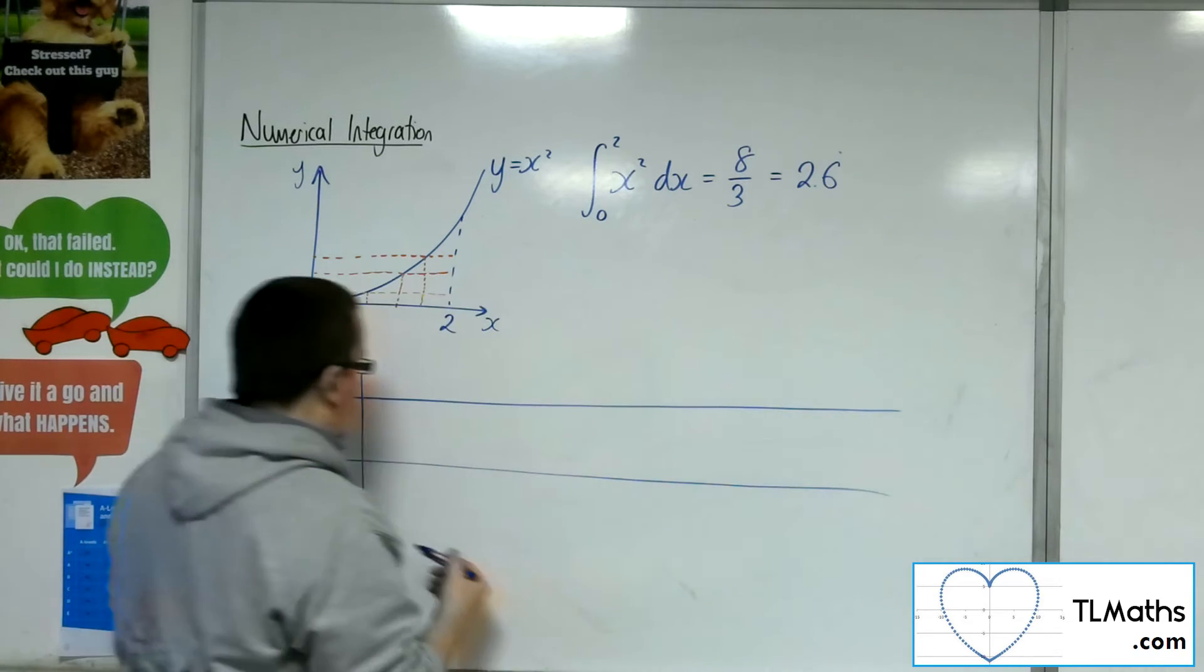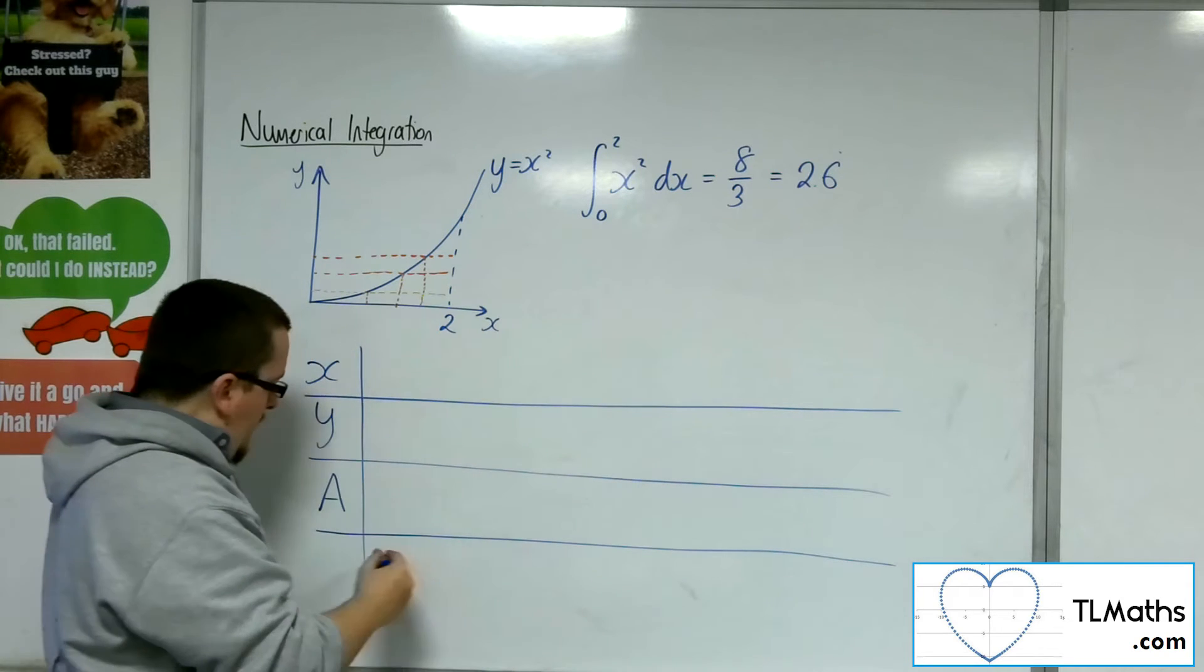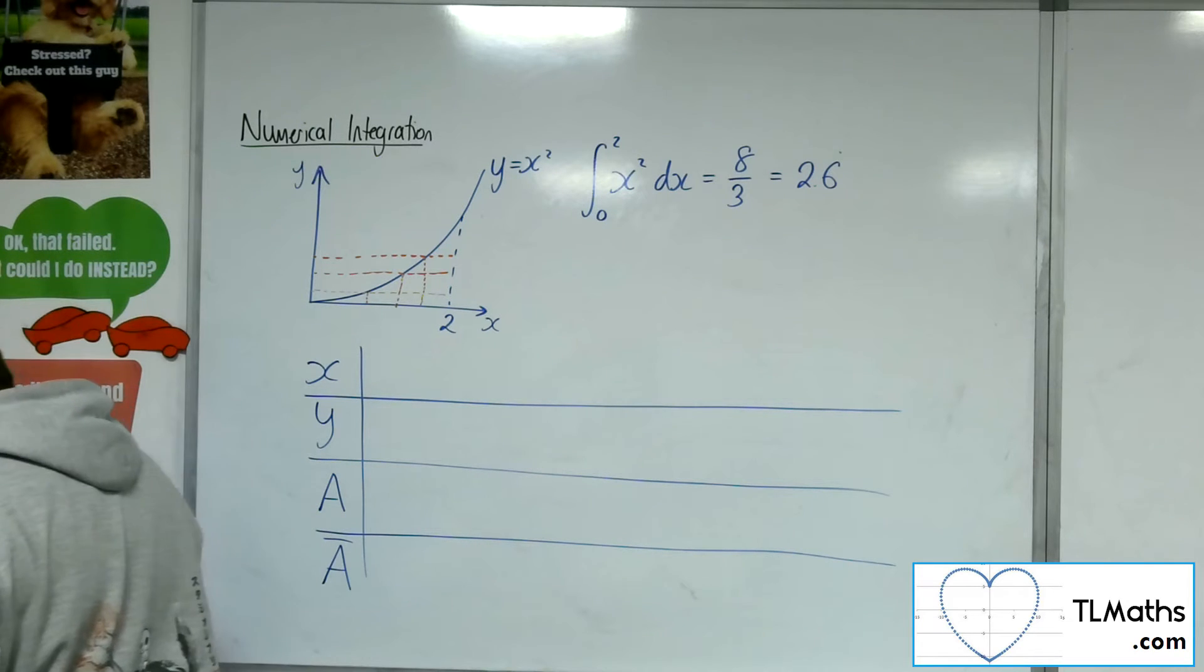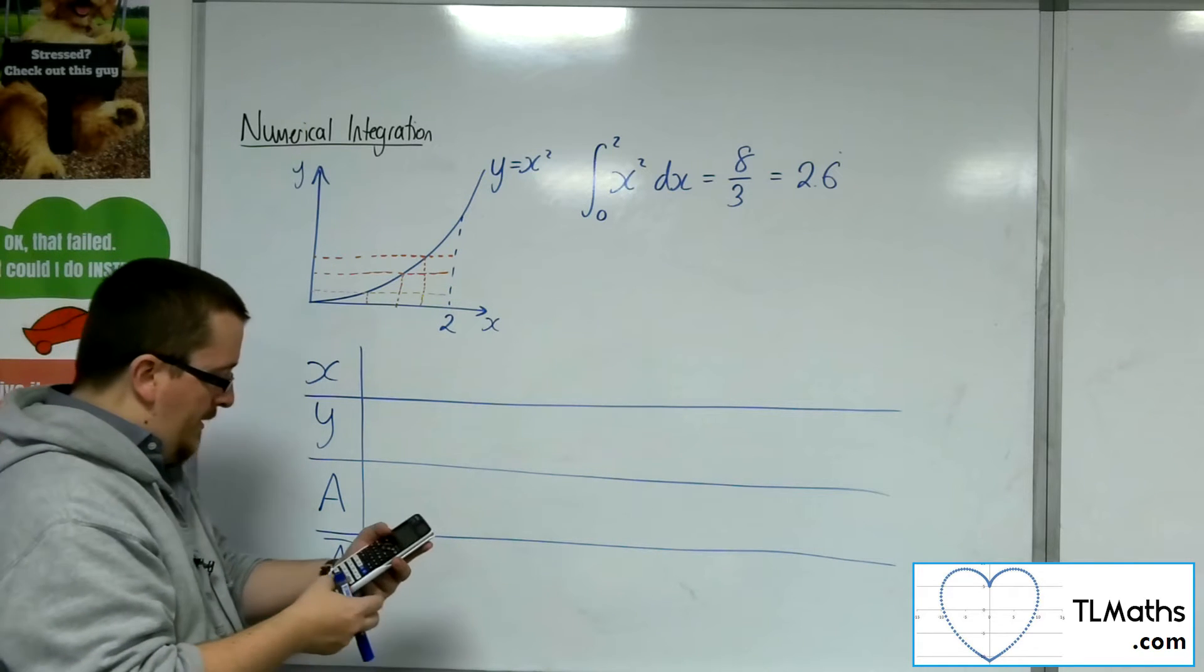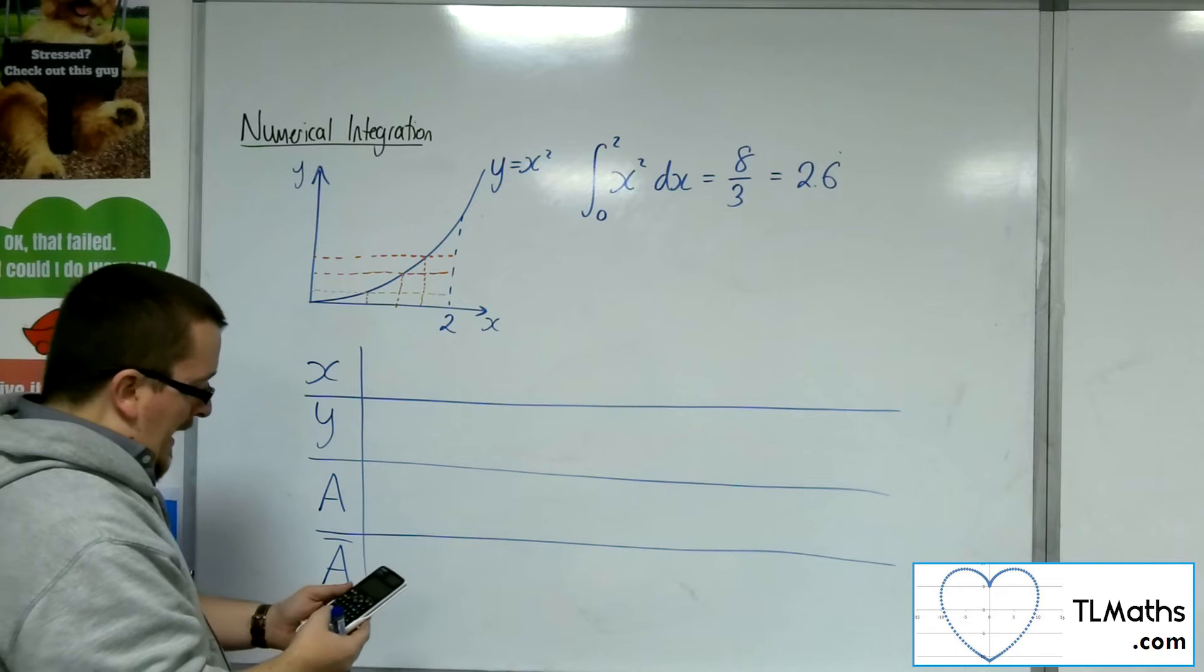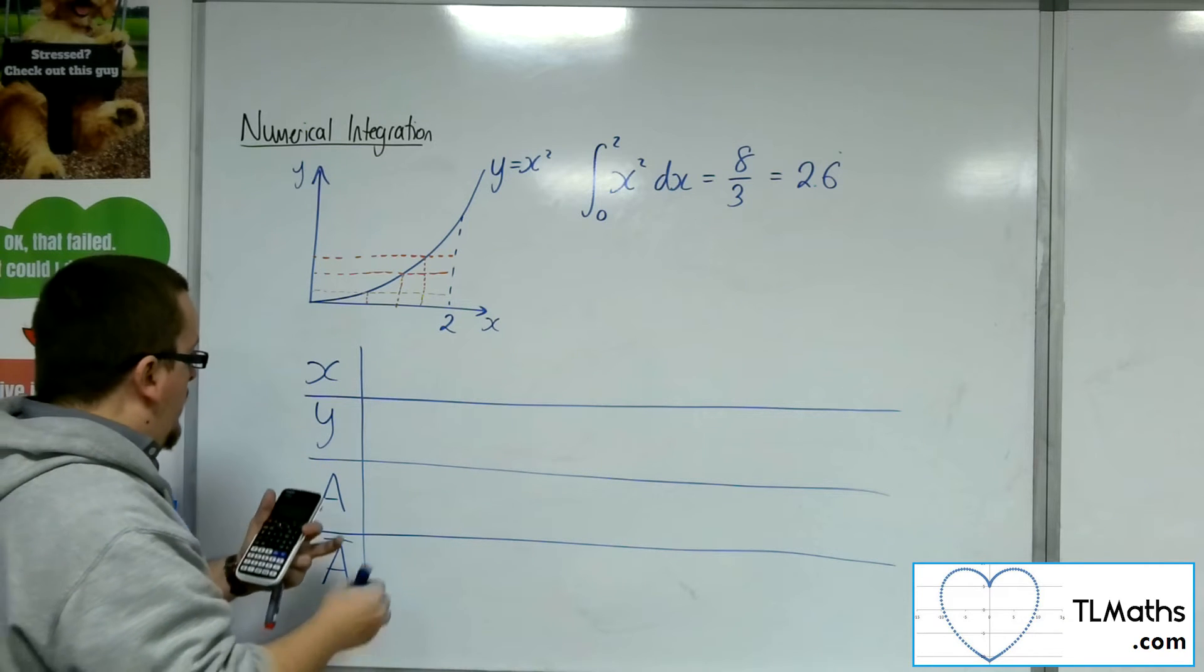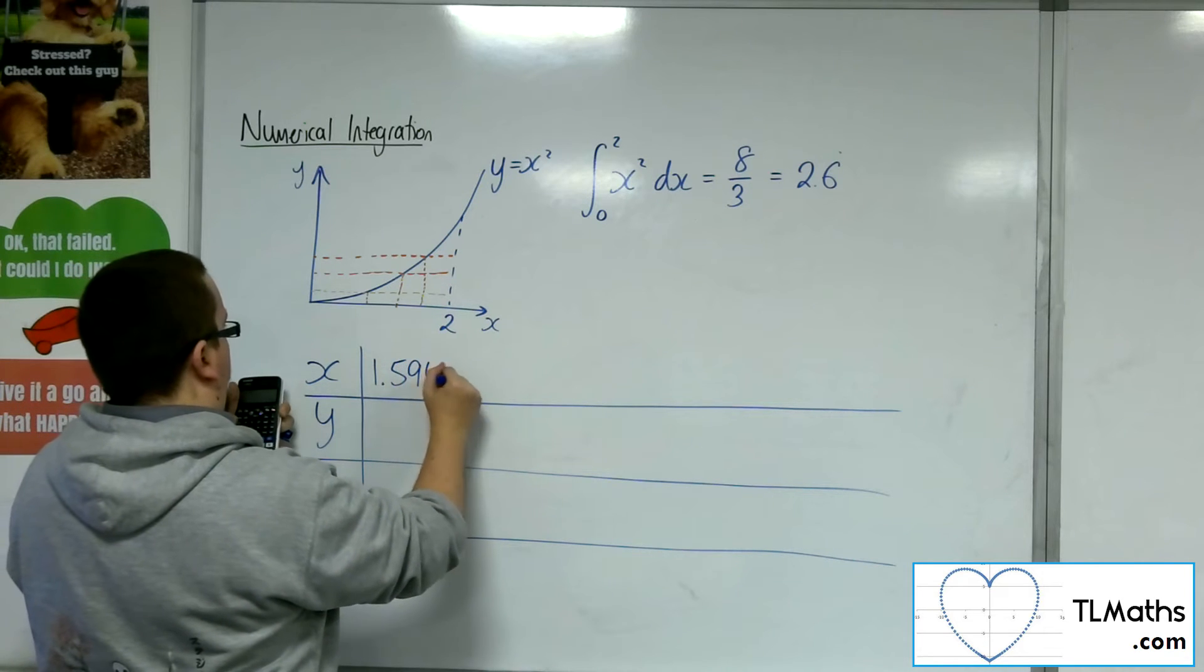And for each of those, we're going to have an area of the rectangle. And then it would be interesting if we keep a running average. So let's say we pick a random X value. I'm going to use my random number generator on the calculator, so that's shift and then ran hashtag. And then I can times that by 2 to give me a random number between 0 and 2. And I get in this case 1.594.